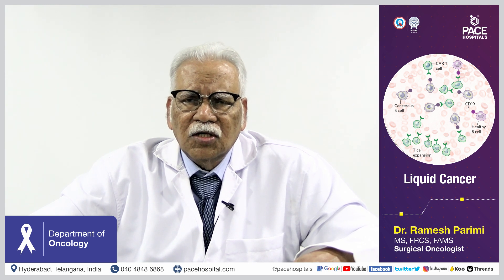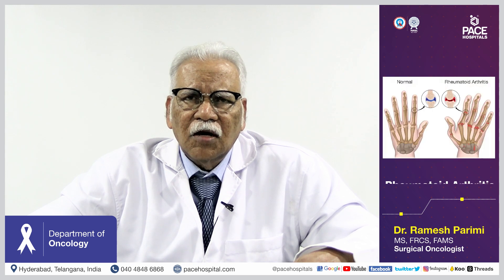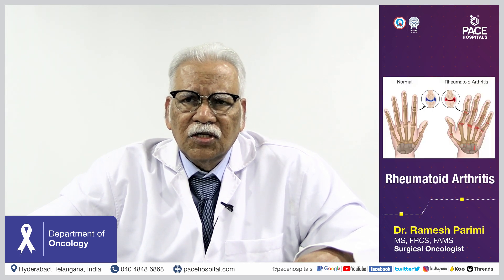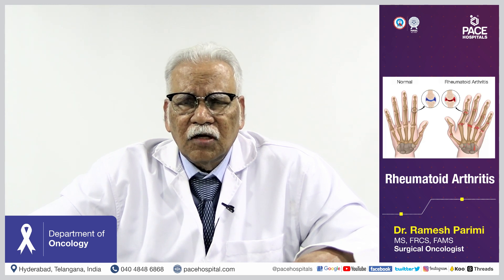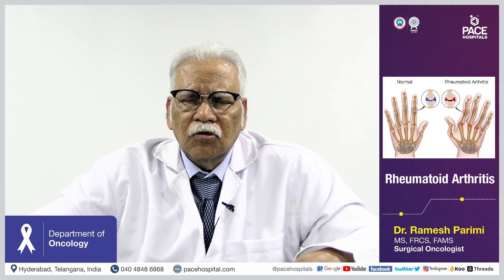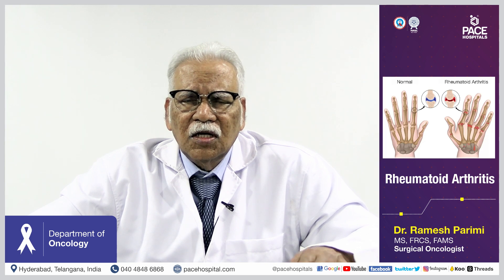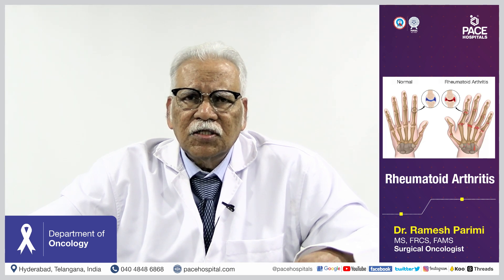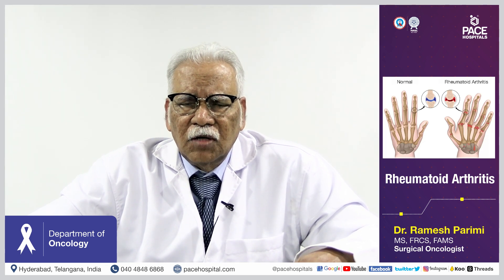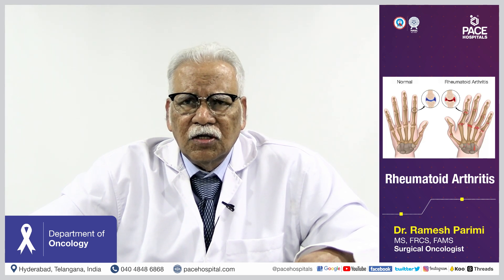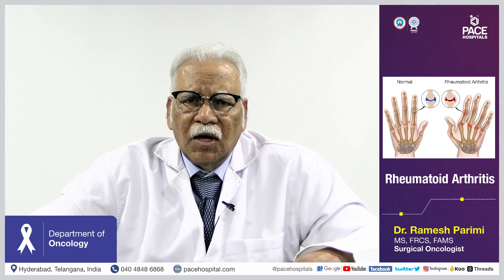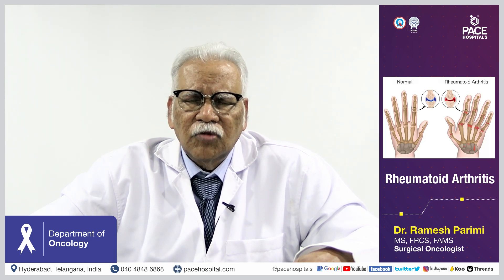Chemotherapy is also used in non-malignant conditions such as rheumatoid arthritis and other diseases, where not only oral forms of chemotherapy but also injectable monoclonal antibodies are given — the latest example being ulcerative colitis. So while chemotherapy is primarily a cancer treatment, it is also used in a minor capacity for non-malignant conditions.